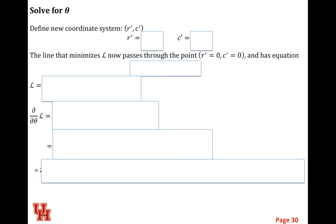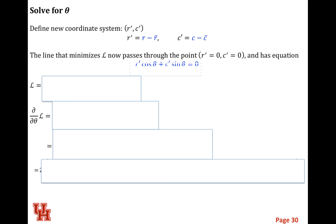Now we want to figure out the orientation of this line. We already know the line has to go through the center of the object, so it makes sense to define a new coordinate system where r-prime equals r minus the centroid, and c-prime equals c minus the centroid. This translates the object to be centered at the origin. Our L function to minimize in terms of r-prime has no offset — all we need to figure out is the orientation theta. We take the first derivative with respect to theta and set it to zero.